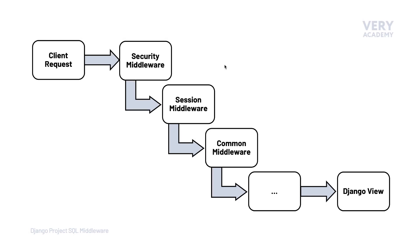Let's imagine we wanted to filter out any request from a client from a specific IP address. We could create middleware which would inspect the request from the client, extract the IP address, and then determine whether it matches a banned IP address. If it does, we could simply send a response directly from the middleware back to the client, informing them that they do not have access to this system.